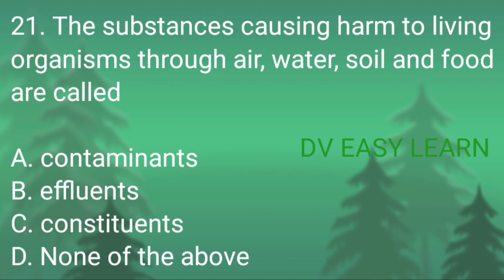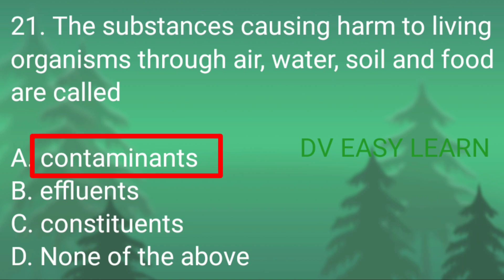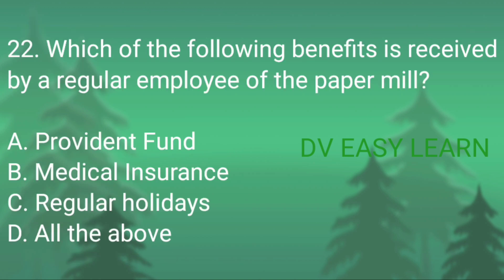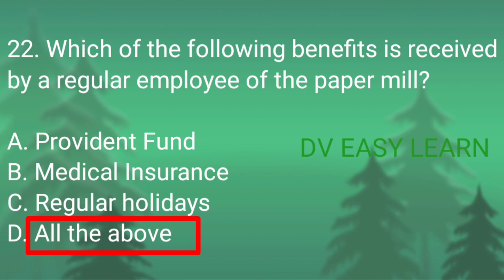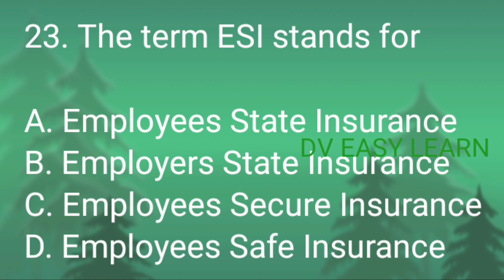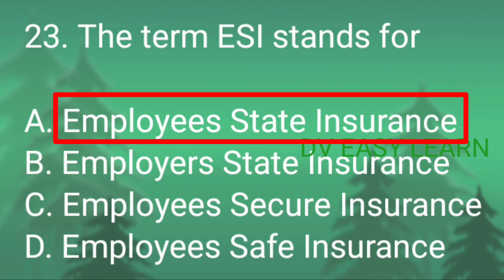Question number 21: the substances causing harm to living organisms through air, water, soil and food are called — correct answer: contaminants. Question number 22: which of the following benefits is received by a regular employee of the paper mill — correct answer: all the above — provident fund, medical insurance, regular holidays. Question number 23: the term ESI stands for — correct answer: employees state insurance.